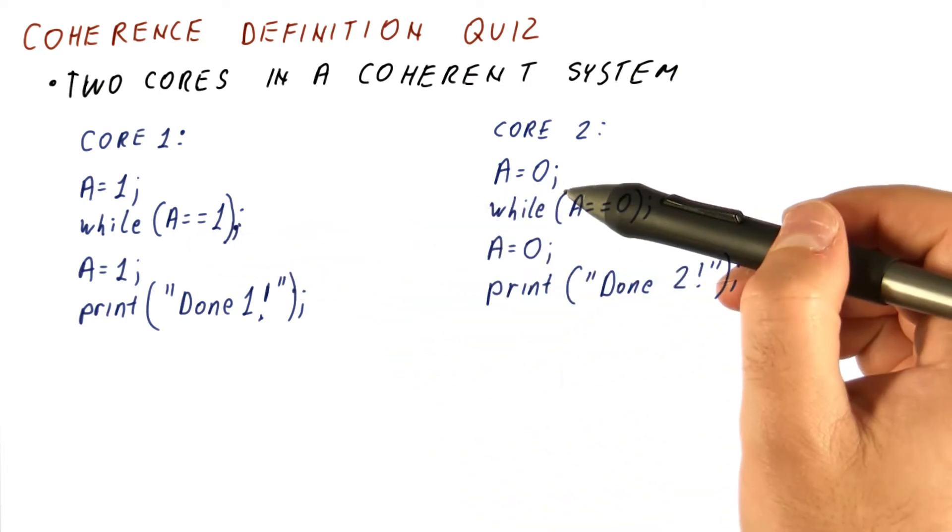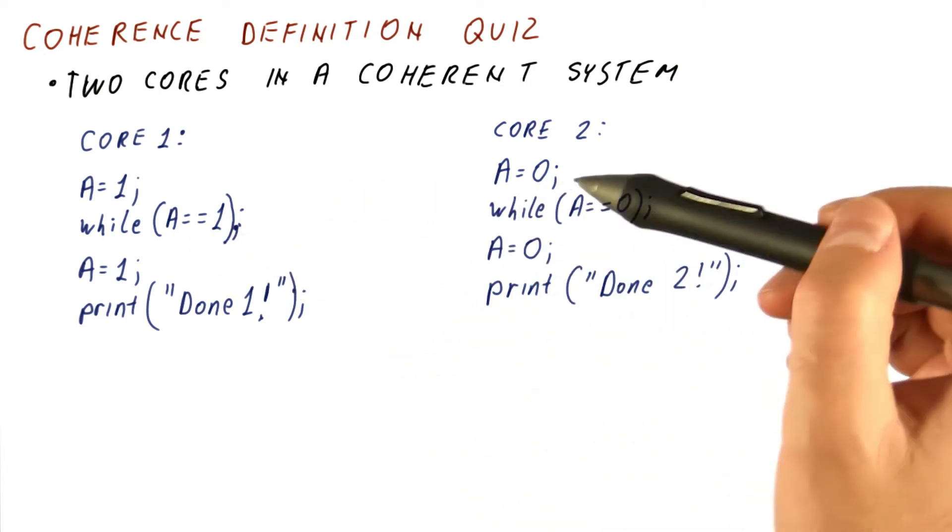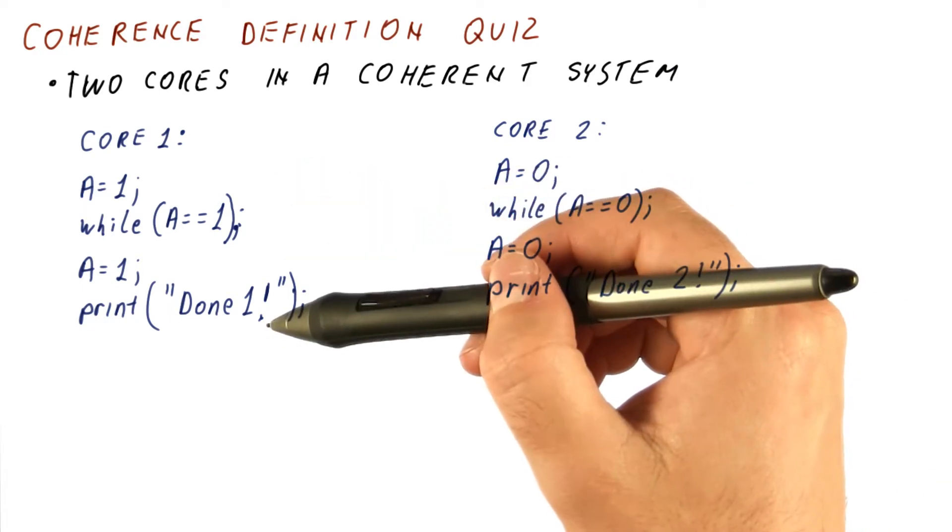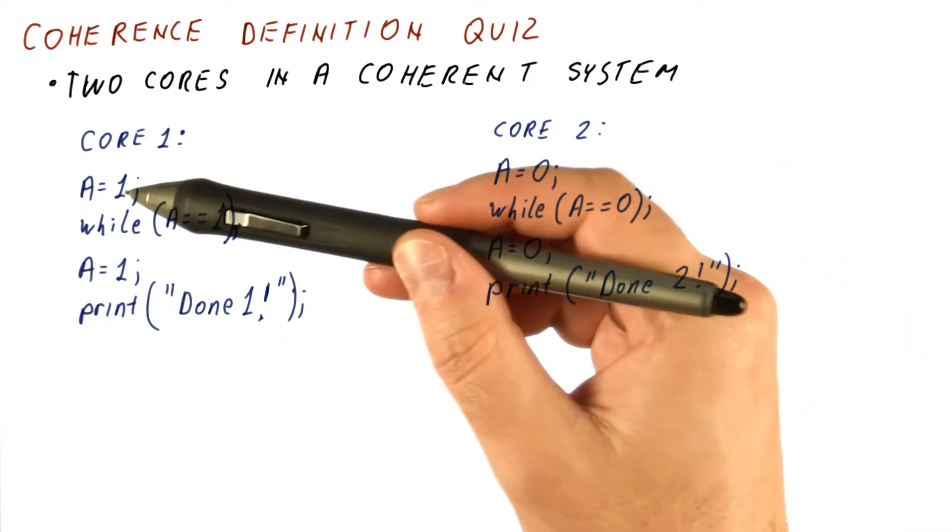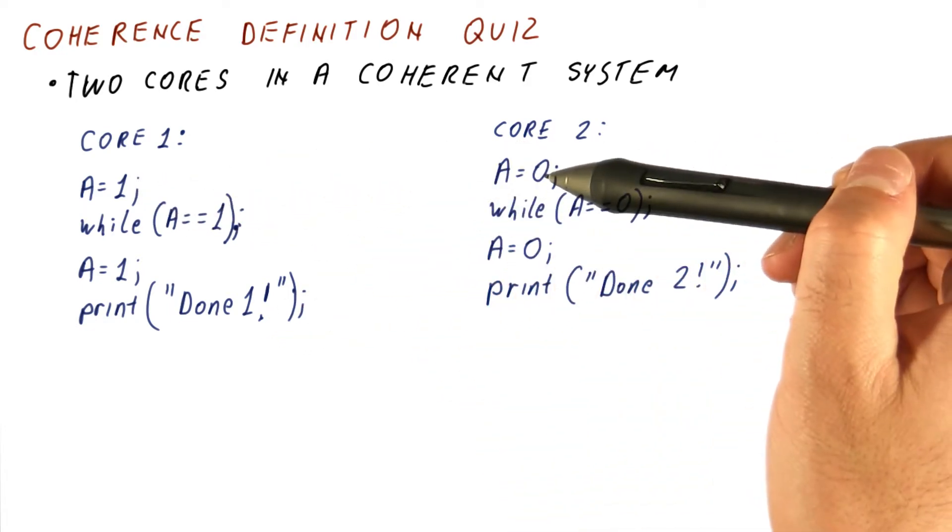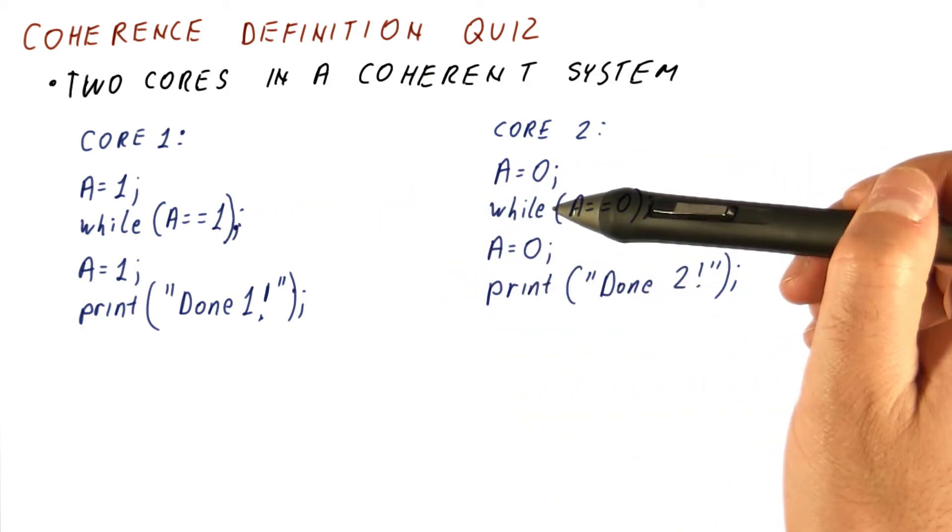And remember that core one and core two need not necessarily execute these two programs in lockstep. So it's not necessary that core one executes this while core two does this, core one does this while core two does this and so on.